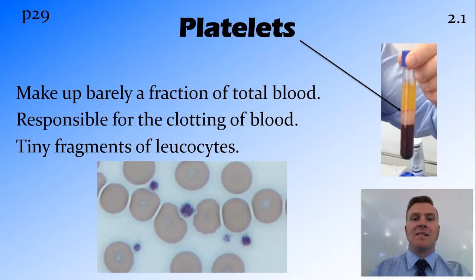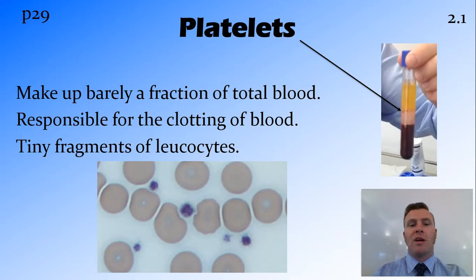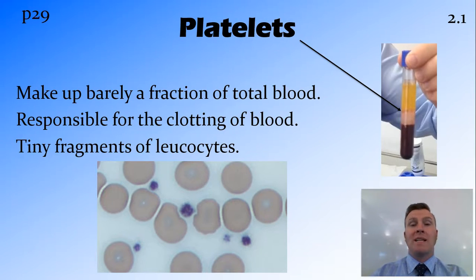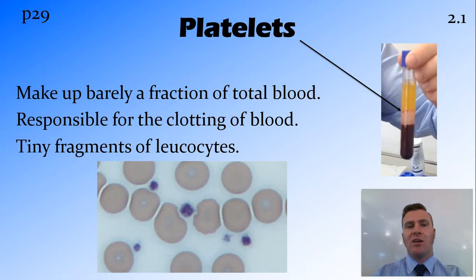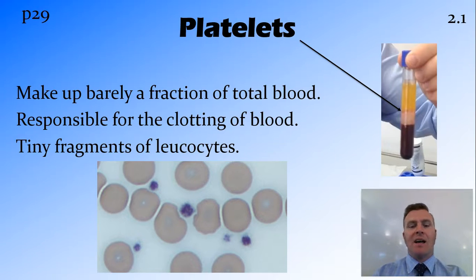Platelets are only a very small fraction of the total amount of blood, but they are very important. They're made of tiny fragments of leukocytes — as the white blood cells break down, they're kept as platelets in the body. They're very important in the clotting of blood — so when you cut yourself, the platelets release a whole heap of factors that help stop that bleeding.